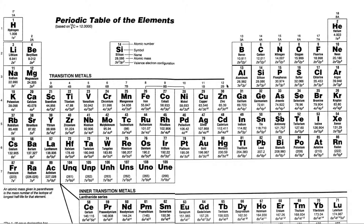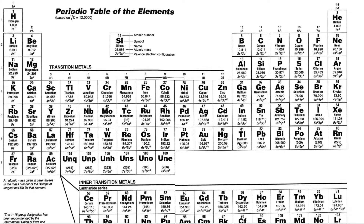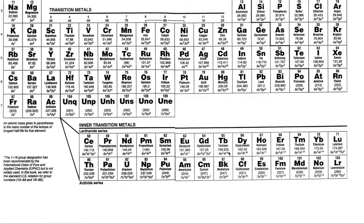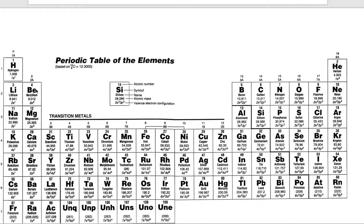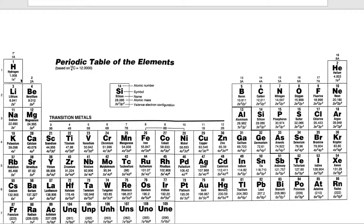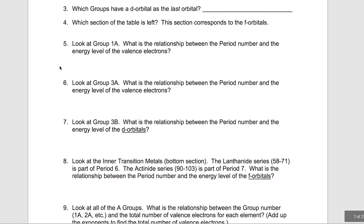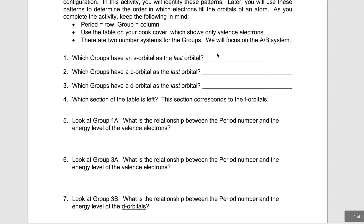For the transition metals, they're D orbitals; for the main block, they're P orbitals; and down there they are F orbitals for the most part. So the groups that have S orbitals as the last electron that went in are groups 1A and 2A.